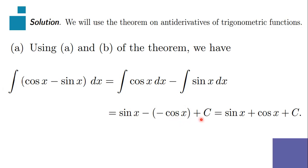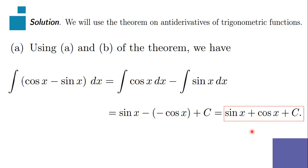We simplify — negative and negative turns to positive. So our final answer is sine x plus cosine x plus C.